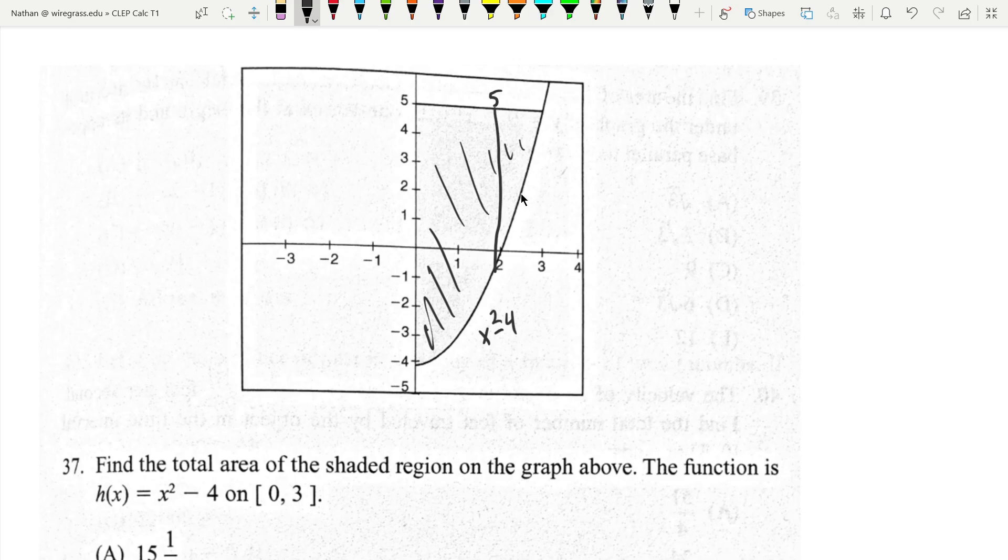The top is going to be 5, the bottom is going to be x squared minus 4. So our integral is going to be from 0 to 3 of the top minus the bottom, which is x squared minus 4 dx.